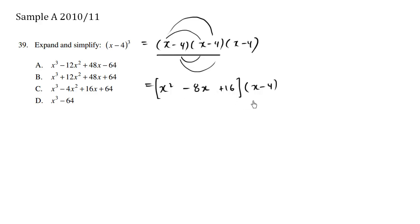And this is where we can just use some distribution. This is my first number, times this, this times this, this times this. Then I'm going to work on this times this, this times this, this times this.